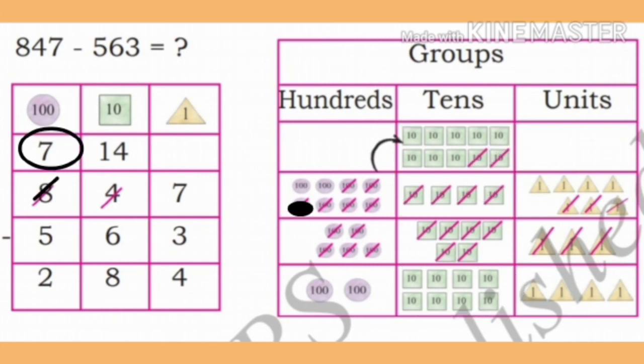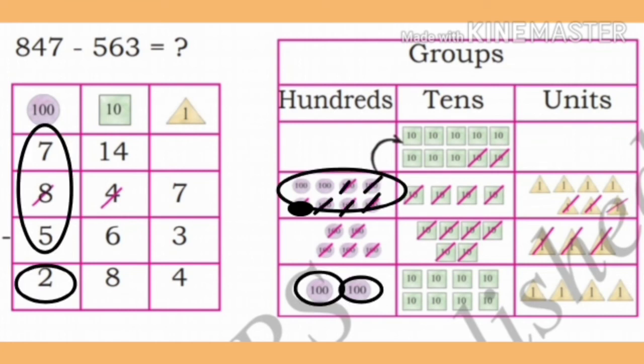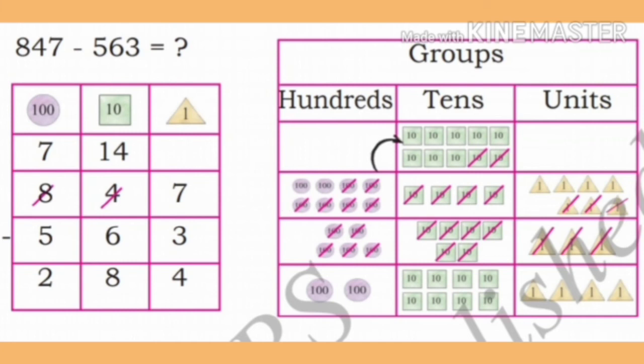Now, 700 are remaining in the hundreds group. Subtract 5 from 7. We get 2. Write the remaining 2 in the hundreds place. Therefore, when 563 is subtracted from 847, 284 remains.